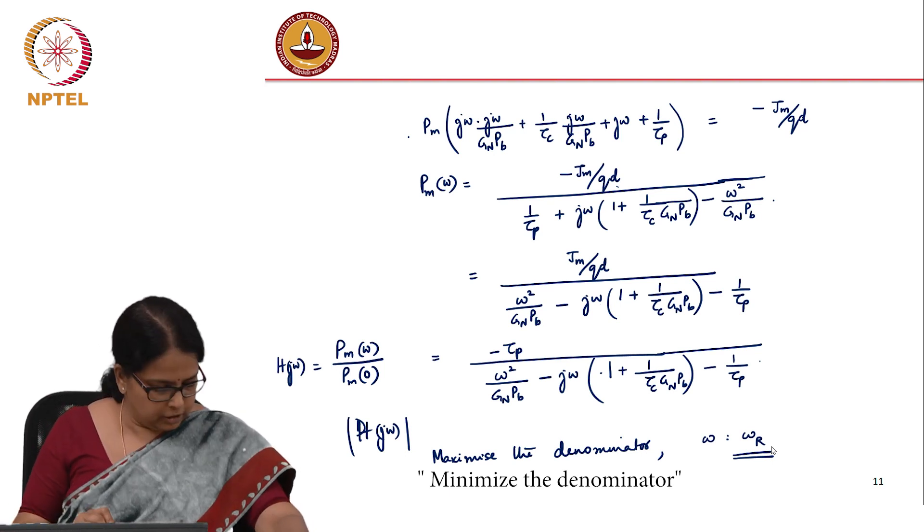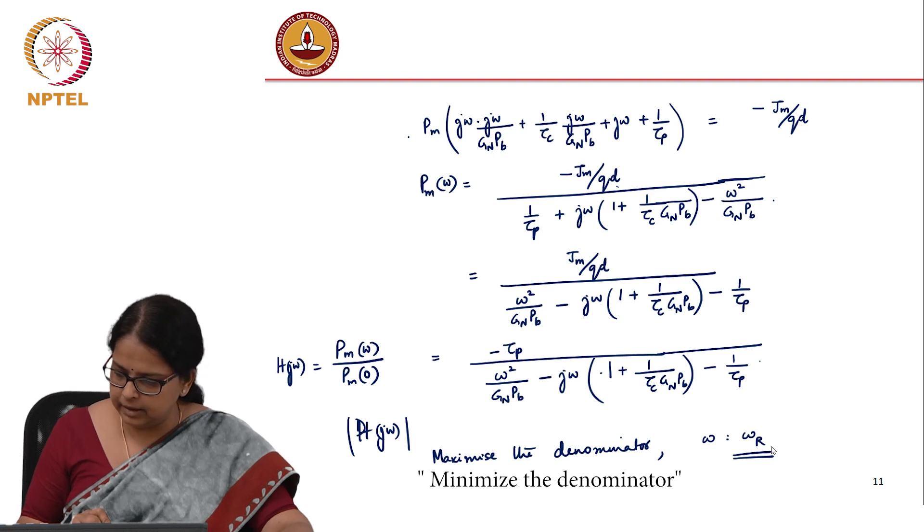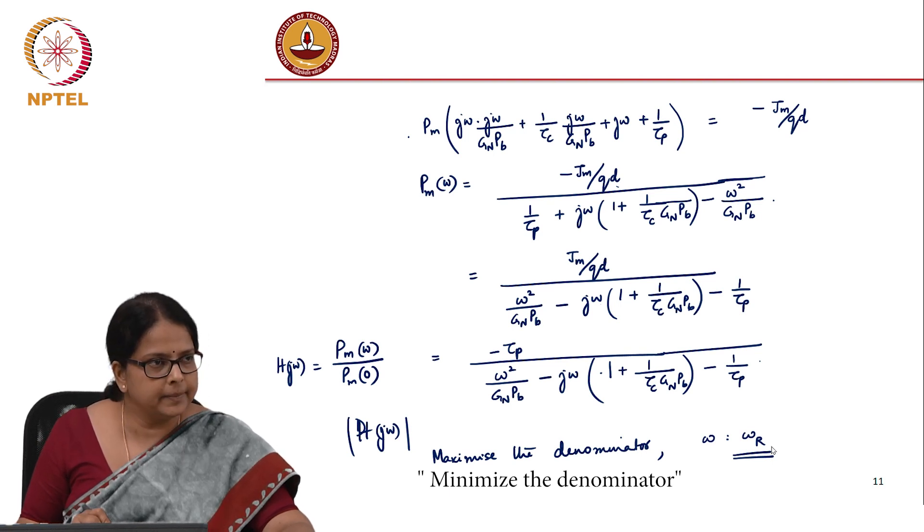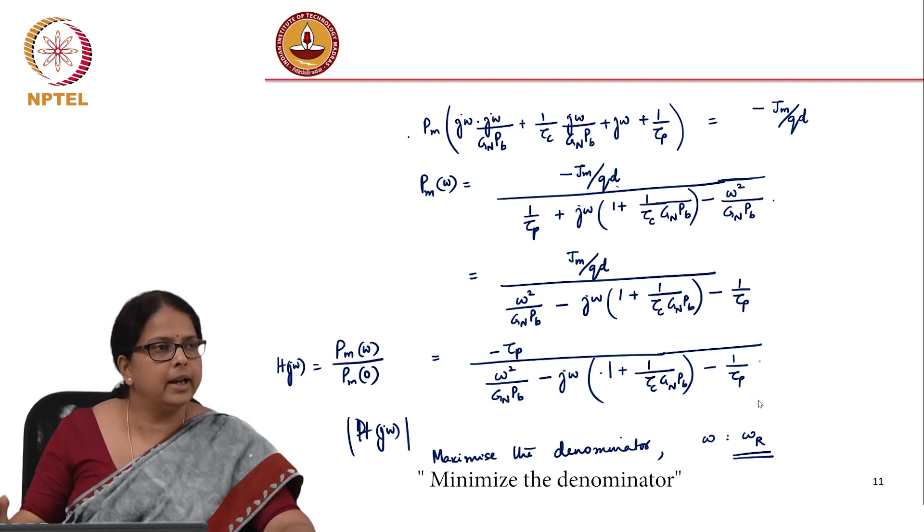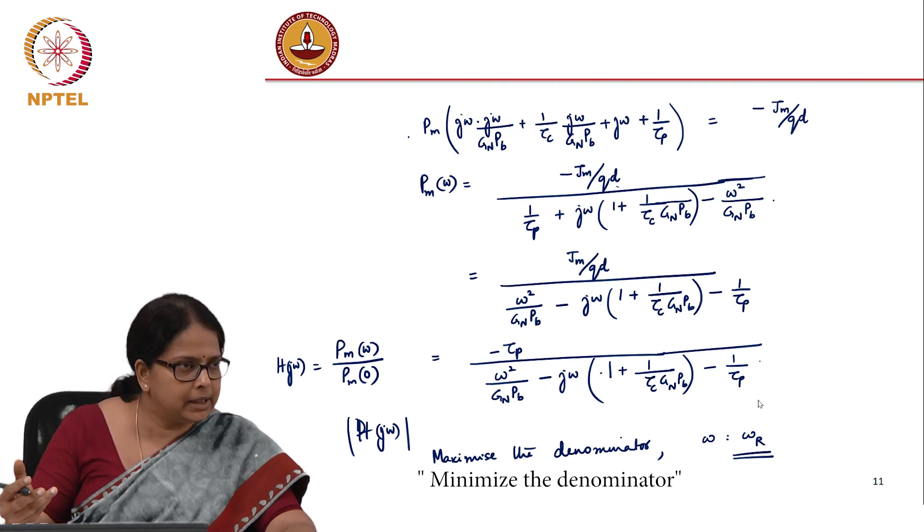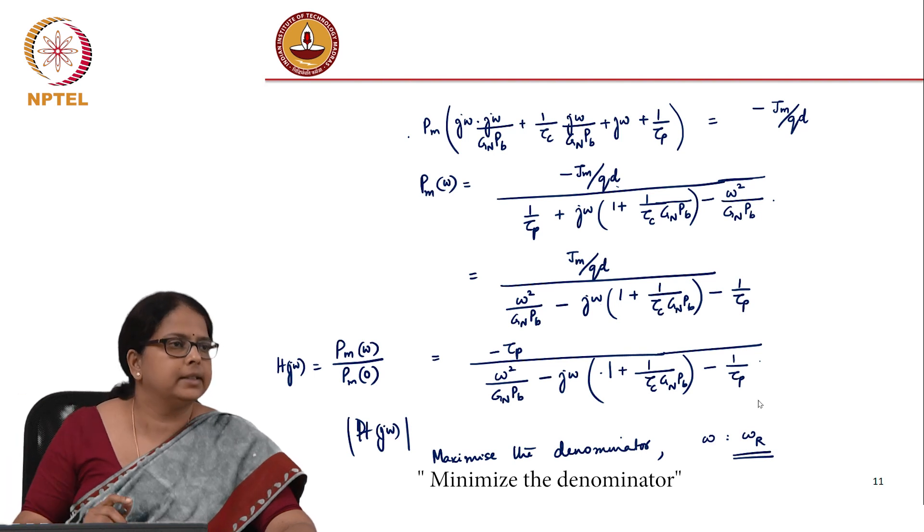That is a little more involved algebraic exercise. Essentially you need to do a mod of this equation and derivative with respect to omega and find out what is that resonant frequency.